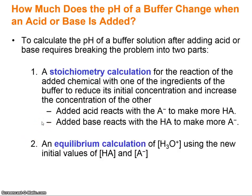The other thing you can do is stress your buffer — how much does the pH change when you add acid or base? I'll do this in two steps. First is a stoichiometry step: added acid reacts with A⁻, the conjugate base, to form more conjugate acid. If you add strong base, it reacts with the weak conjugate acid to form more conjugate weak base. Then we do an equilibrium calculation for H3O+ concentration using the new values for conjugate acid and conjugate base.